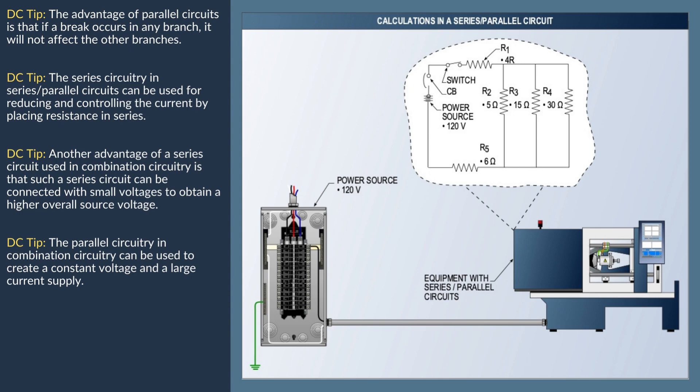In Step 2, finding total amperage: IT (total amperage) equals ET (total voltage) divided by RT (total resistance), which equals 120 volts divided by 13.33 ohms, equaling 9 amps. In Step 3, finding total resistance: RT (total resistance) equals ET (total voltage) divided by IT (total amperage). Based on this formula, RT equals 120 volts divided by 9 amps, which equals 13.33 ohms.